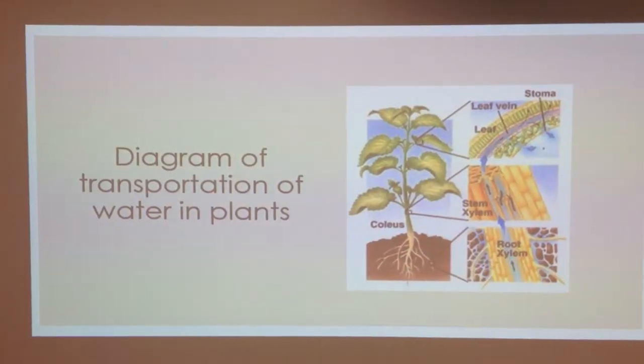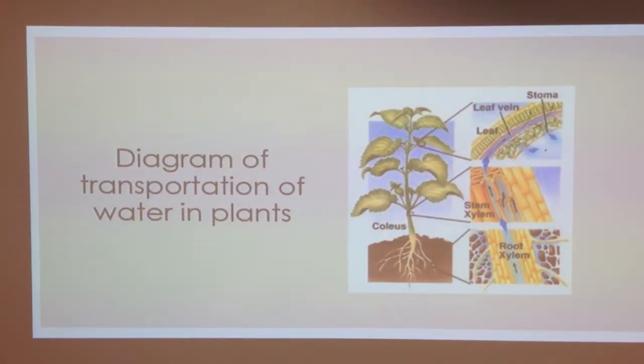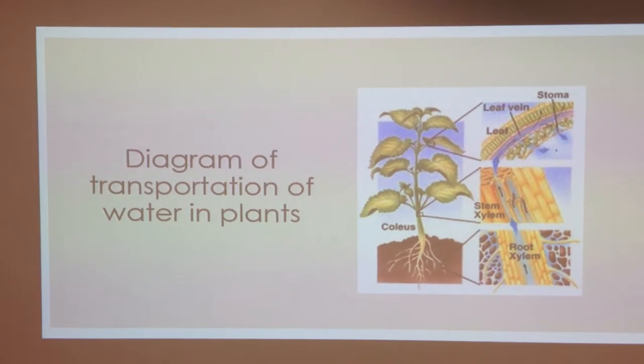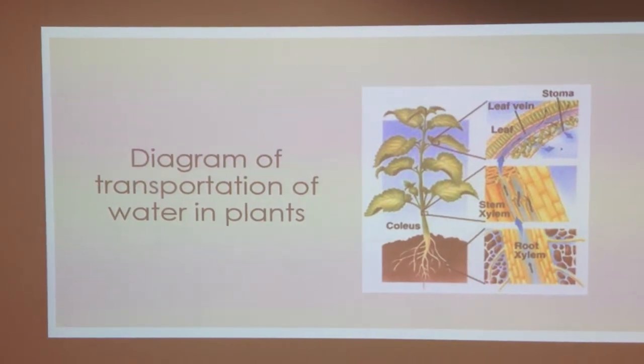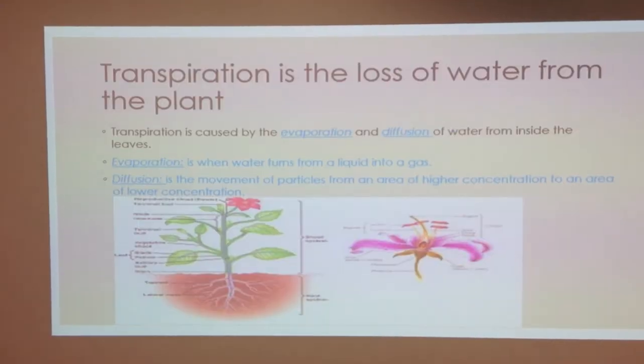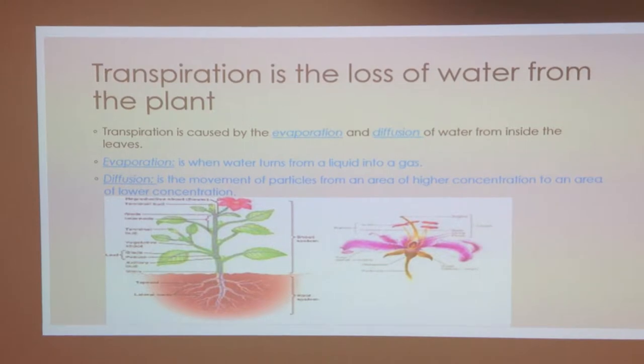Roots have millions of little hairs into the ground. These hairs give the plant a large surface area to absorb water. There is usually a high concentration of water in the soil, so the water enters the root hair cell by osmosis.